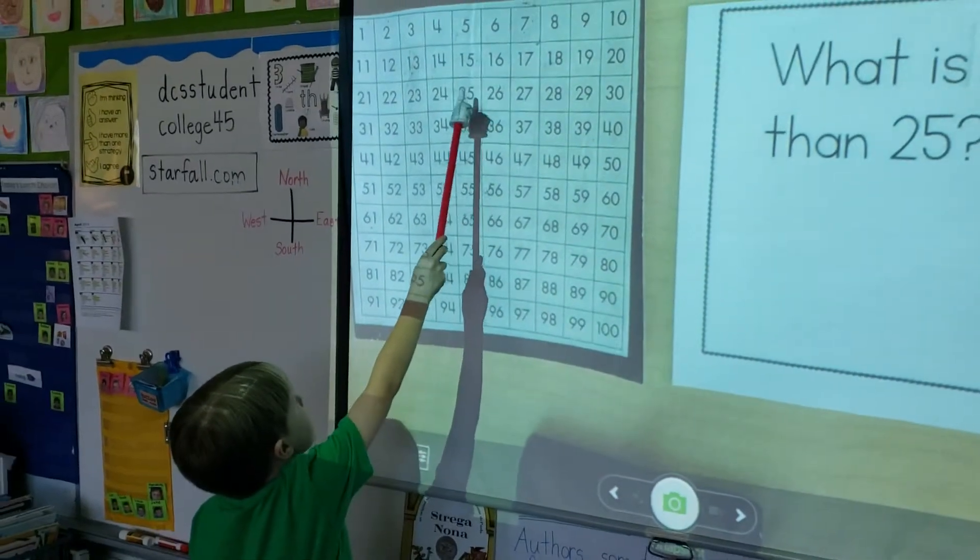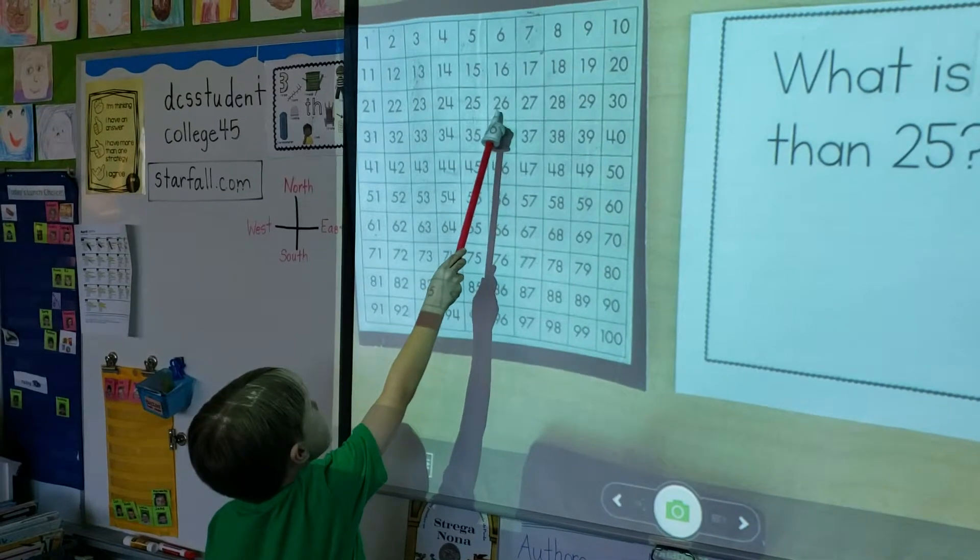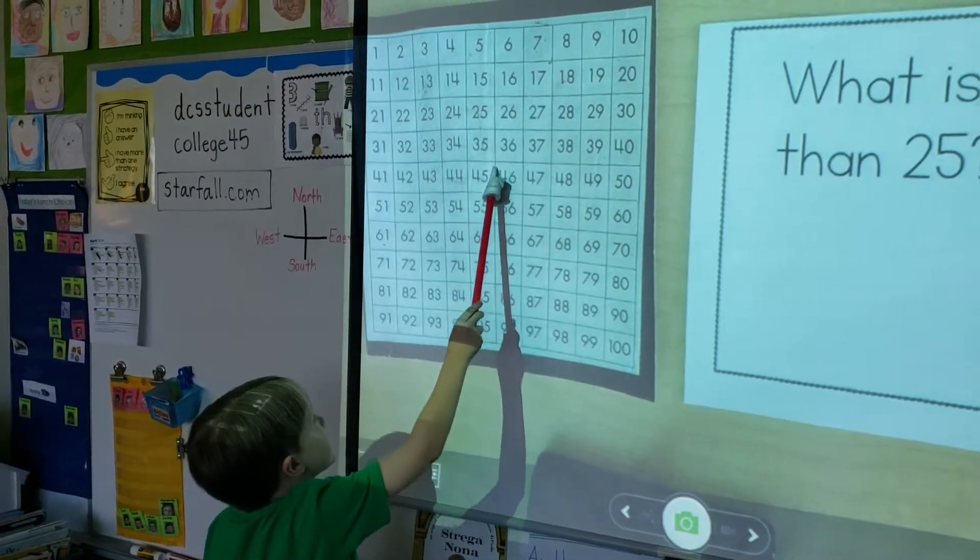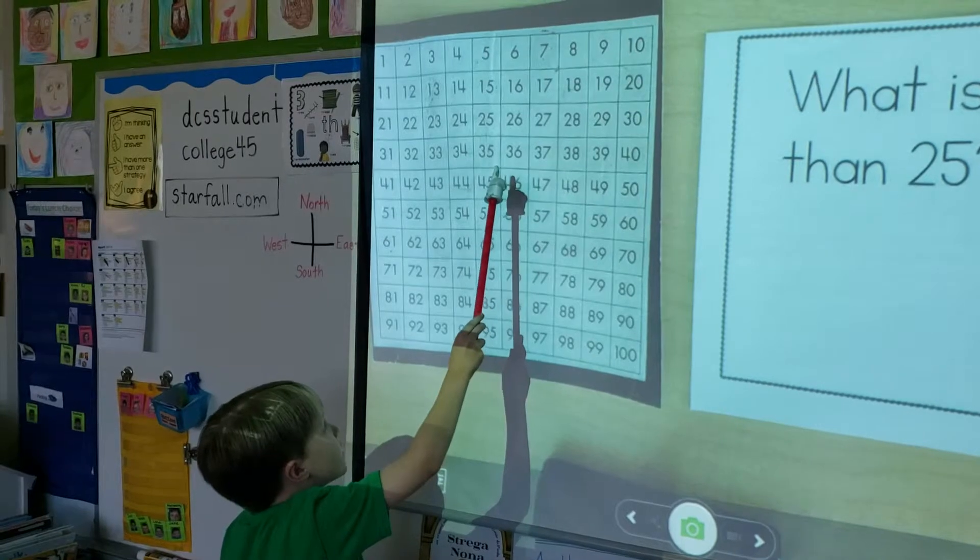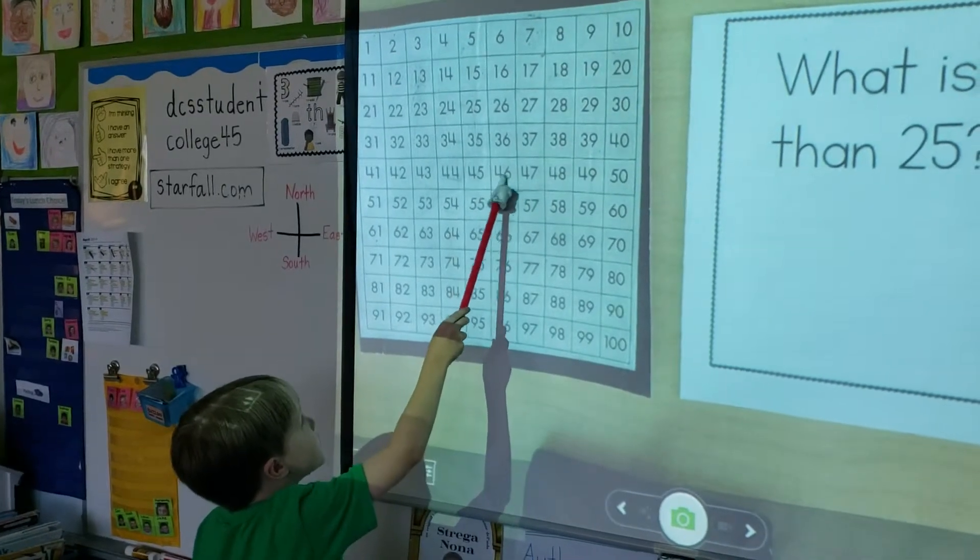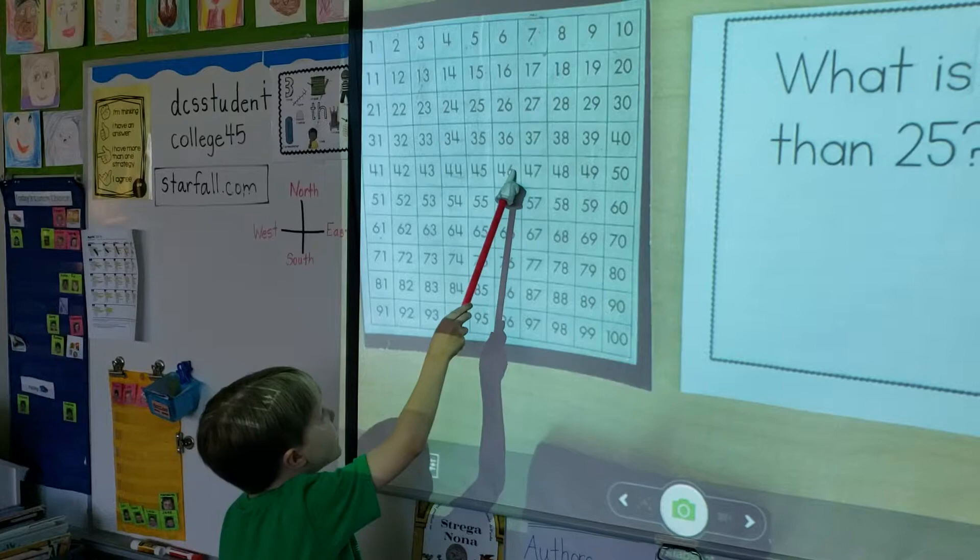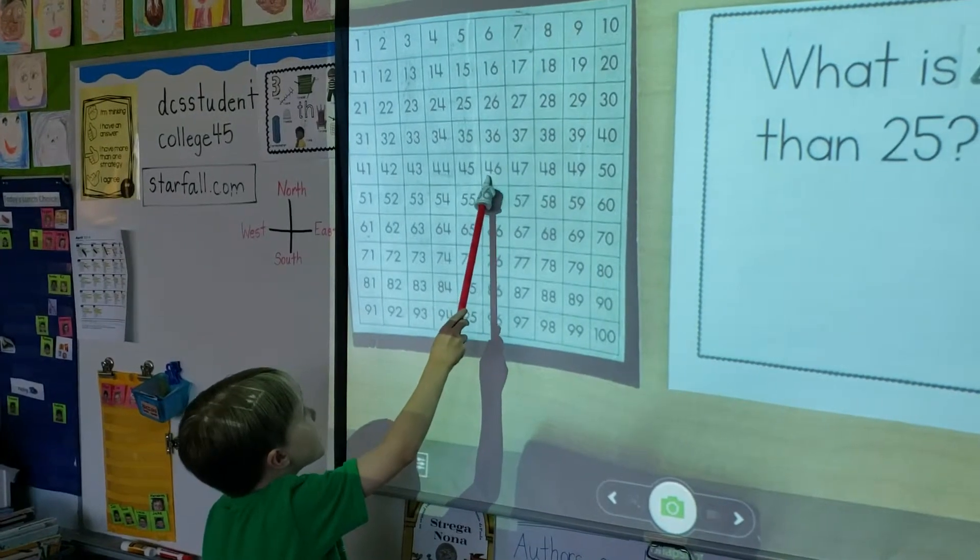So, I know that one more than 25 is 26. So, I already knew that it was 46 because I do a lot of math at home. And that's how I got my answer.